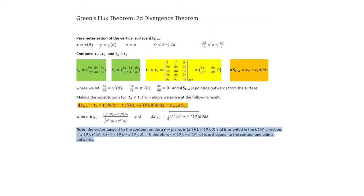To parameterize the vertical transverse surface, let X equal X(theta), Y equal Y(theta), and Z equal z, where theta runs from 0 to 2pi and Z ranges between minus delta-Z over 2 and positive delta-Z over 2. We compute the tangent vectors T_theta and T_z, then T_theta cross T_z, ensuring the differential surface area points outwards to agree with the Divergence Theorem's convention.